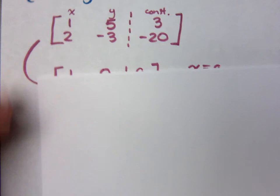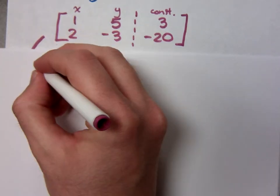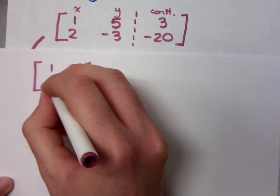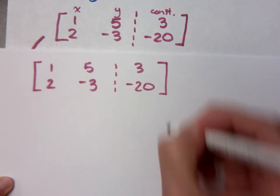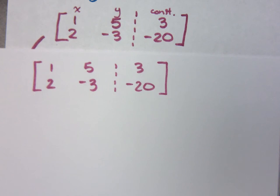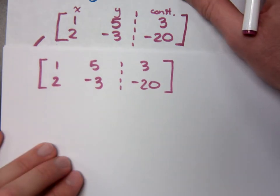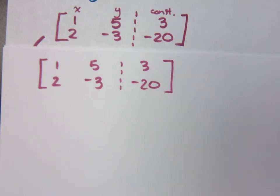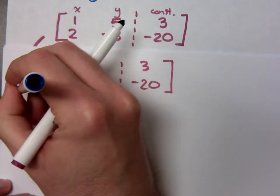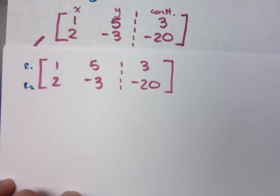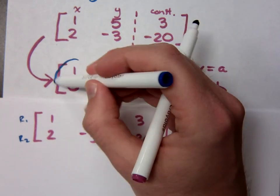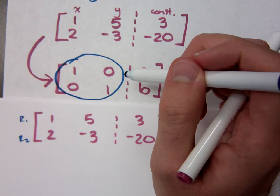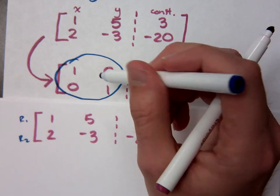Through matrix operations, your goal is to take something that looks like this, and you transform it using multiplication and addition with rows, and you want it to become this: 1, 0, 0, 1, and then the A and B are just going to be numbers. Because if you can do that, if you can do operations to get to here, what this tells you is that X is equal to A and Y is equal to B.